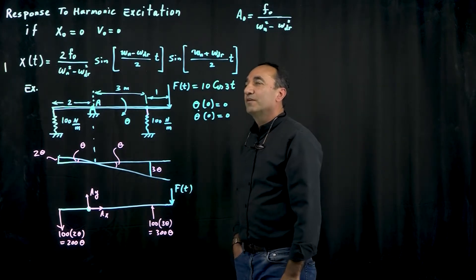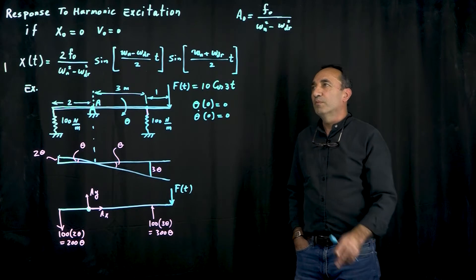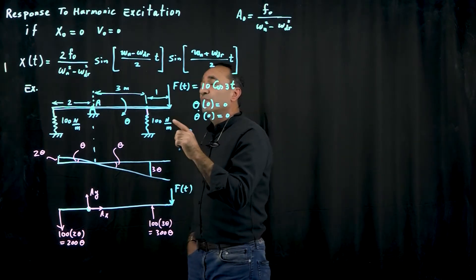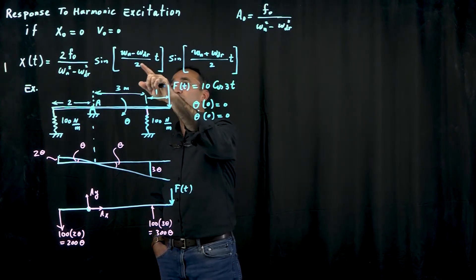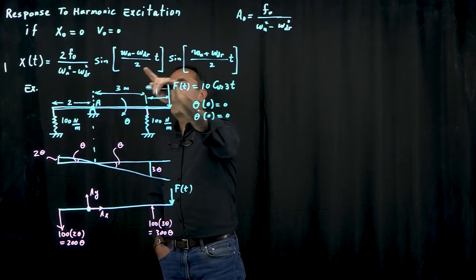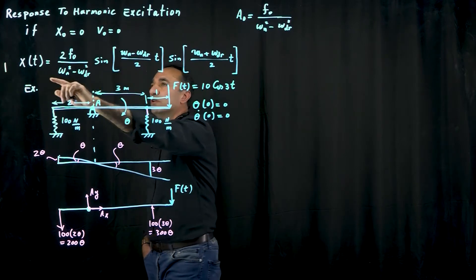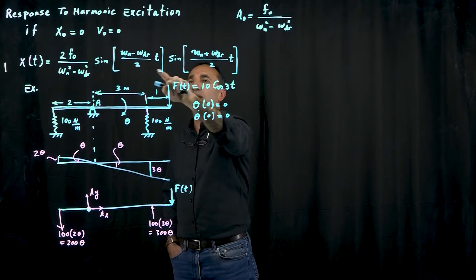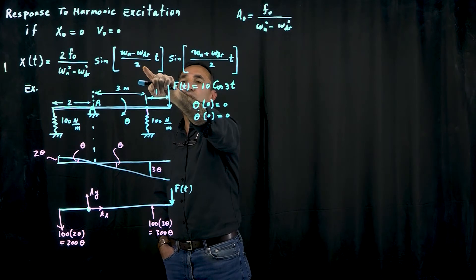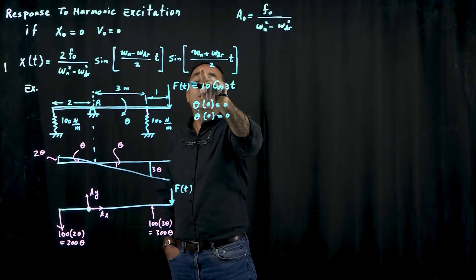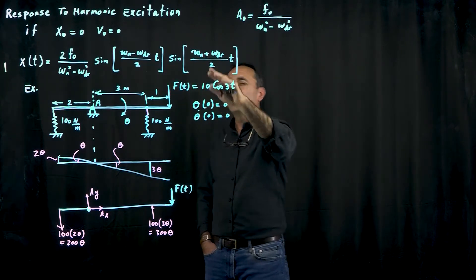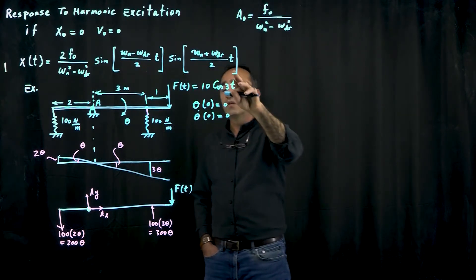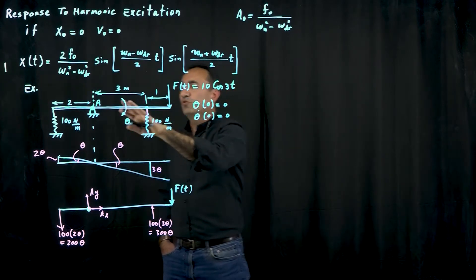Now we'll do an example. We want to look at the overall solution specifically when the initial conditions are zero, so x0 is 0 and v0 is 0. If we modify the equation, it would be 2F0 over omega_n squared minus omega_dr squared times two sine waves. One with a very small frequency but large period, one with a large frequency and small period. This is the concept of beat phenomenon, especially when omega_n and omega_dr are very close to one another.